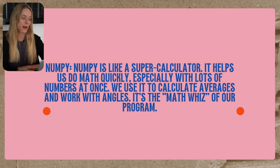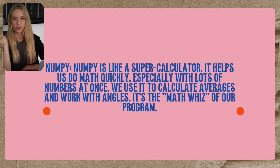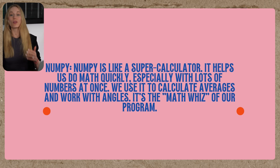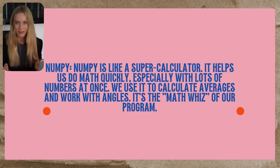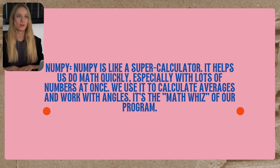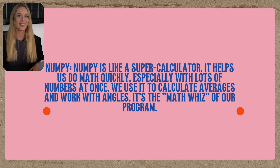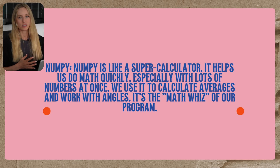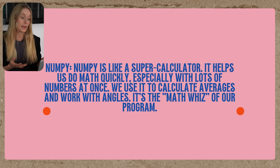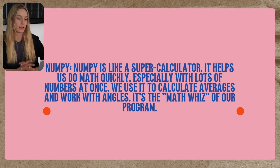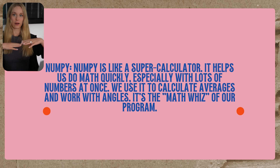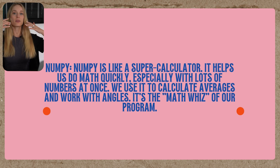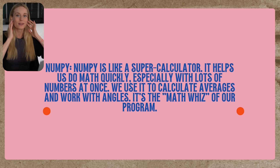Next up is NumPy — the internet really got me when I said 'NumPie' once, but anyway. NumPy is like a super calculator. It really helps us with a lot of different math equations quickly. This is super helpful if you want to build with computer vision or AI but don't want to spend hours on equations. In this case, we use it to calculate averages and work with angles — specifically the average of our shoulders and our ears.